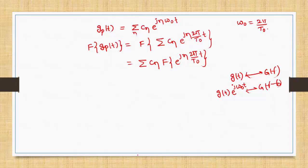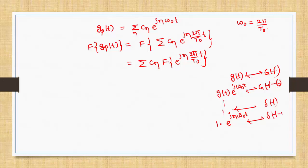Here, in place of omega0 we have n*omega0. Now, what is g(t)? Here g(t) = 1, and the Fourier transform of 1 is delta(f). So we are finding the Fourier transform of 1 * e^(jn*omega0*t), which gives delta(f - n*f0). Substituting back, the Fourier transform of gp becomes sigma Cn * delta(f - n*f0).